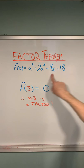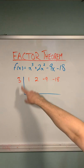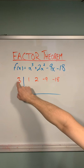This means x minus 3 is a factor of this polynomial. We can set up a synthetic division table using the coefficients of our original polynomial, as well as the value that made our function equal to zero.